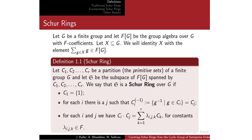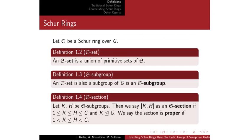We'll move on to a couple more definitions about Schur rings. An S-set for some Schur ring S is a union of some of those primitive sets — some of those CIs. An S-subgroup is an S-set that just happens to also be a subgroup.